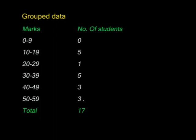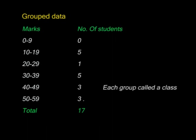This table on your screen shows grouped data. Between 0 and 9 marks there was no student. Five students scored between 10 and 19, only one student scored between 20 and 29. Three students had a score between 50 and 59. In total we had 17 students. When data is represented in this way it is said to be grouped, and each group is called a class.